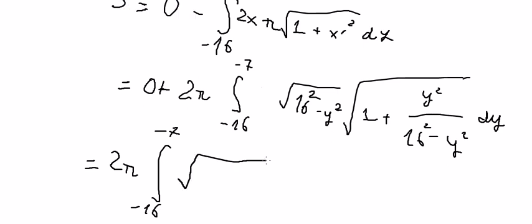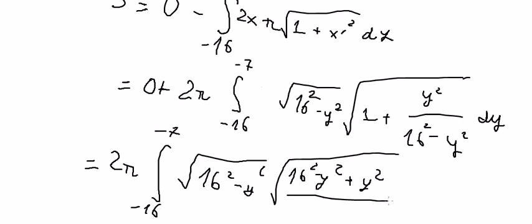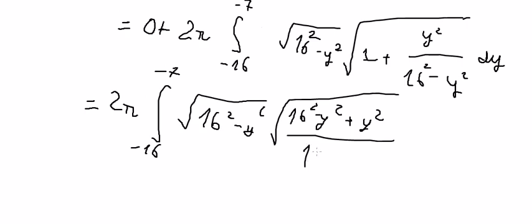So we got y squared. We do a common denominator. We got 16 squared minus y squared minus y squared plus y squared over 16 squared minus y squared dy. These terms will simplify and cancel.